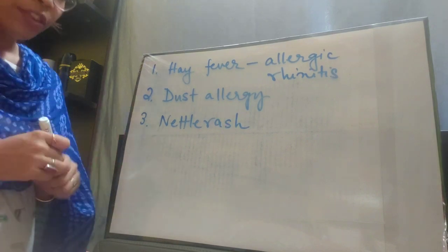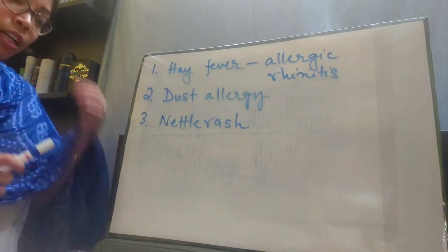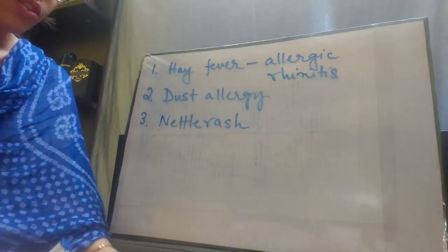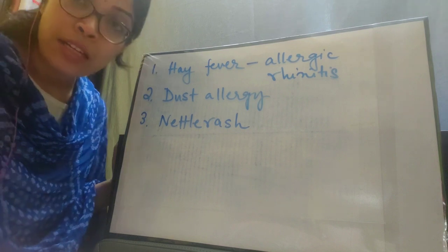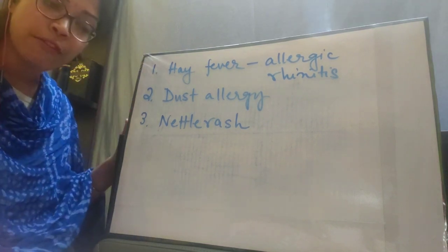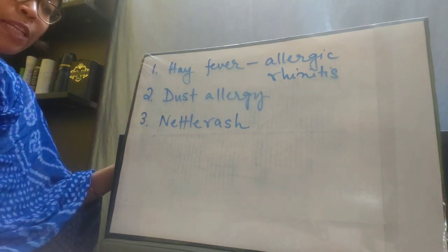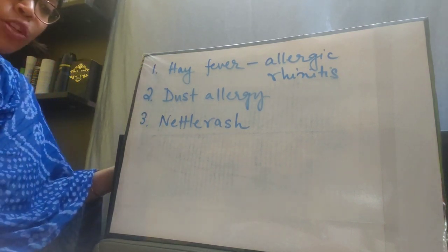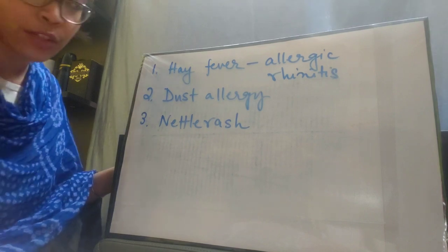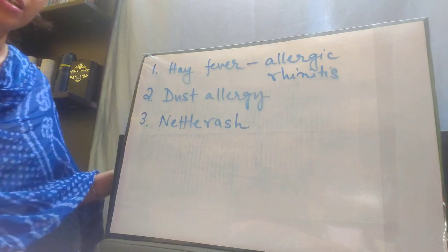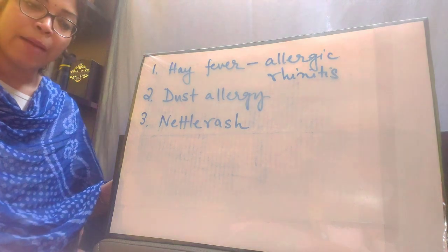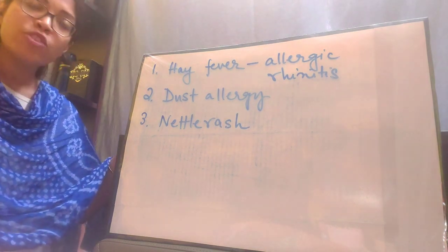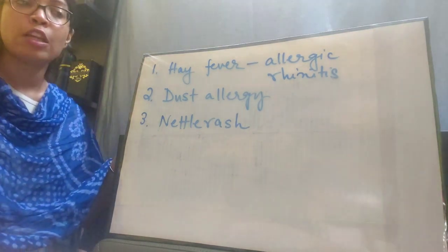Moving on, the third one is nettle rash. The other name of nettle rash is hives. The picture of nettle rash is given in your book — you can see that the mouth area of the child in the picture is swollen, showing someone suffering from nettle rash. It is caused by an allergy to certain food items, medicines, or cosmetics. It produces raised, itchy bumps on the skin which are either red or skin-colored, and they resemble bug bites and can appear on any area of the body.